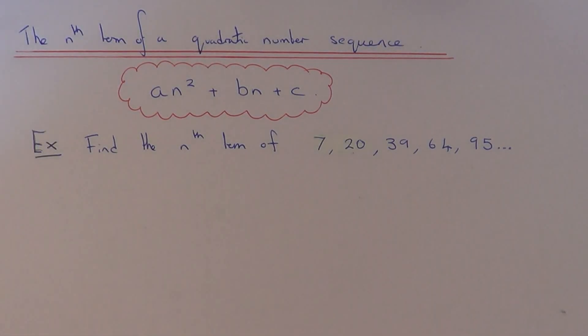Hi, today I'm going to show you how to work out the nth term of a quadratic number sequence. The formula of a quadratic number sequence will be an² + bn + c. So we just need to figure out the values of a, b and c.